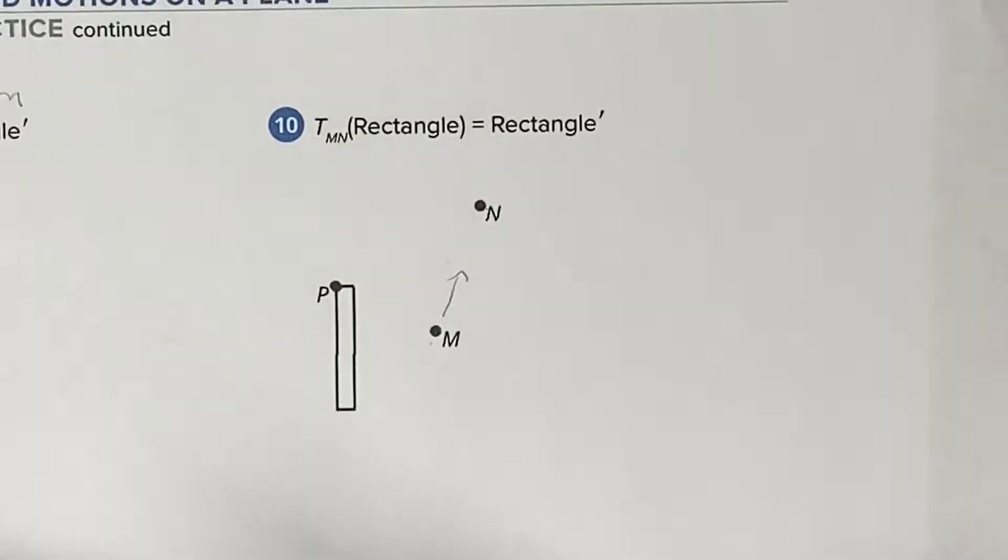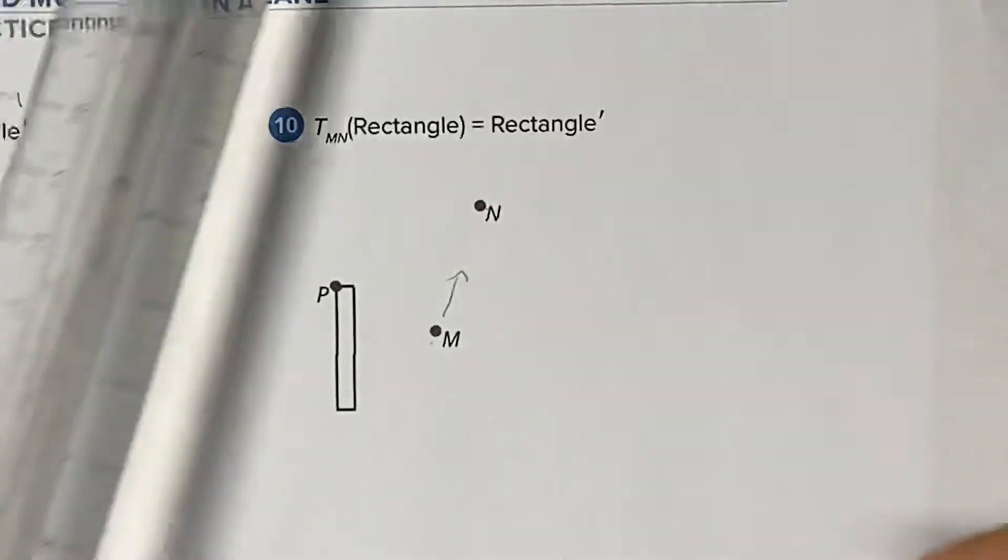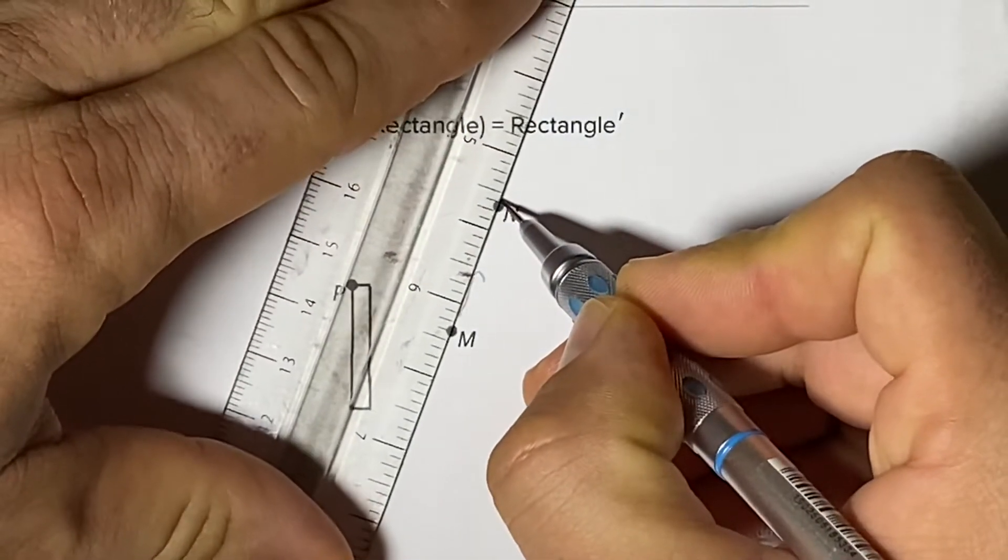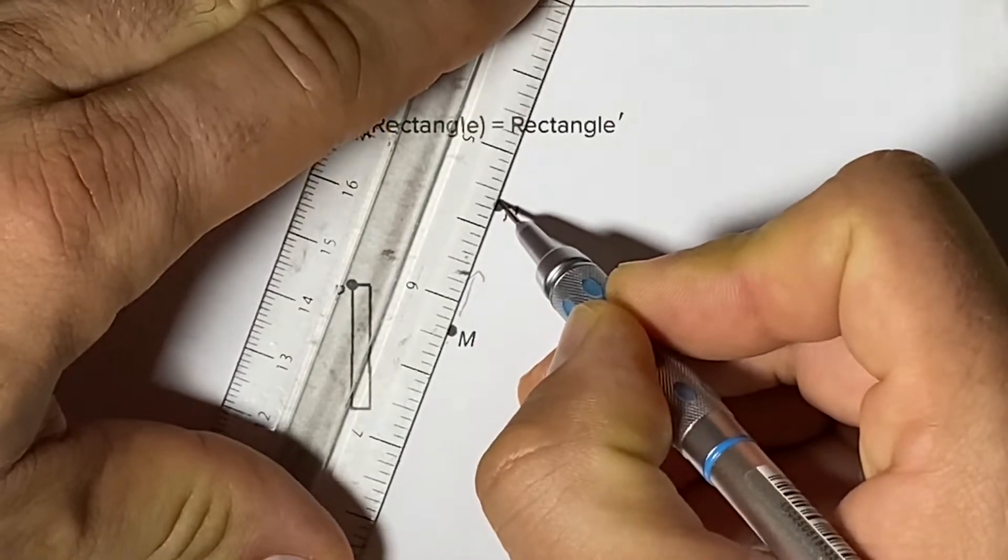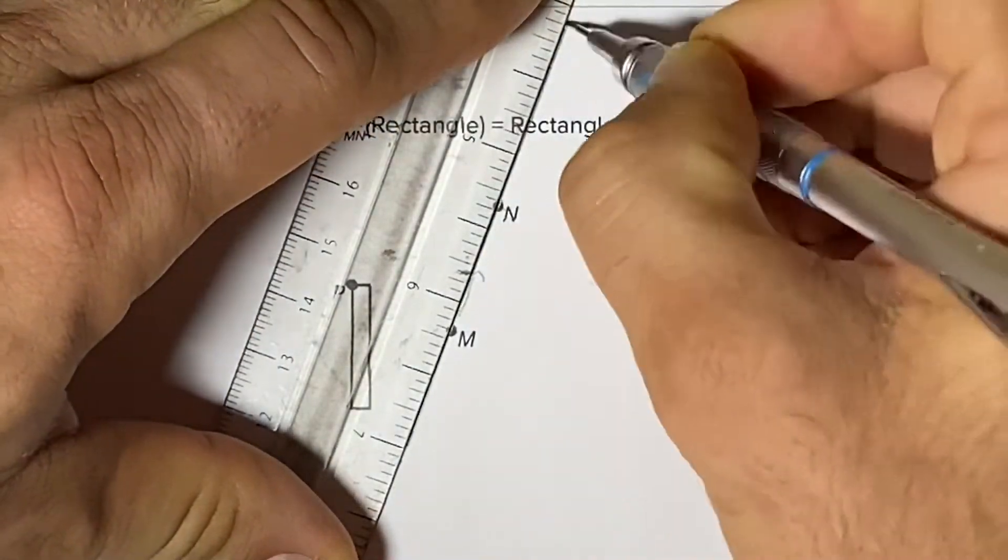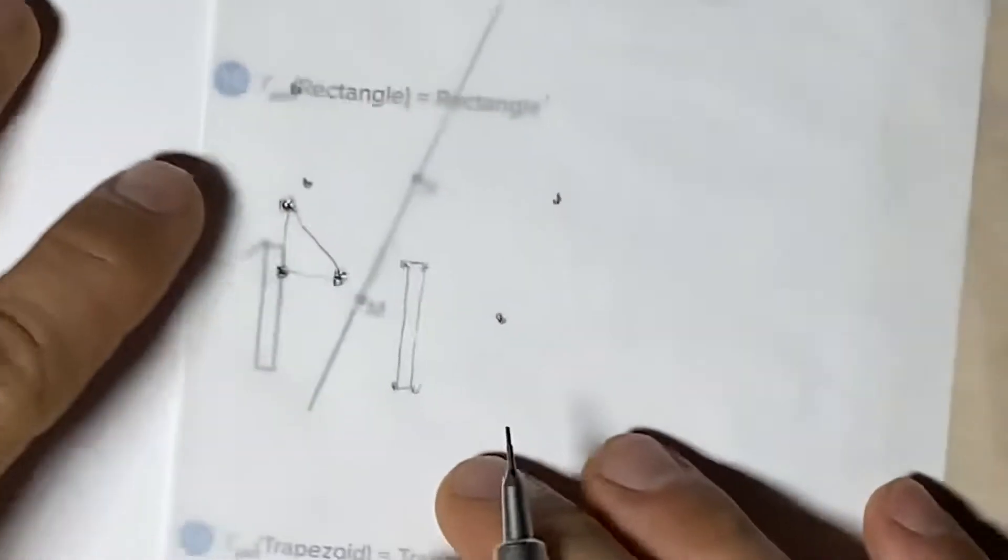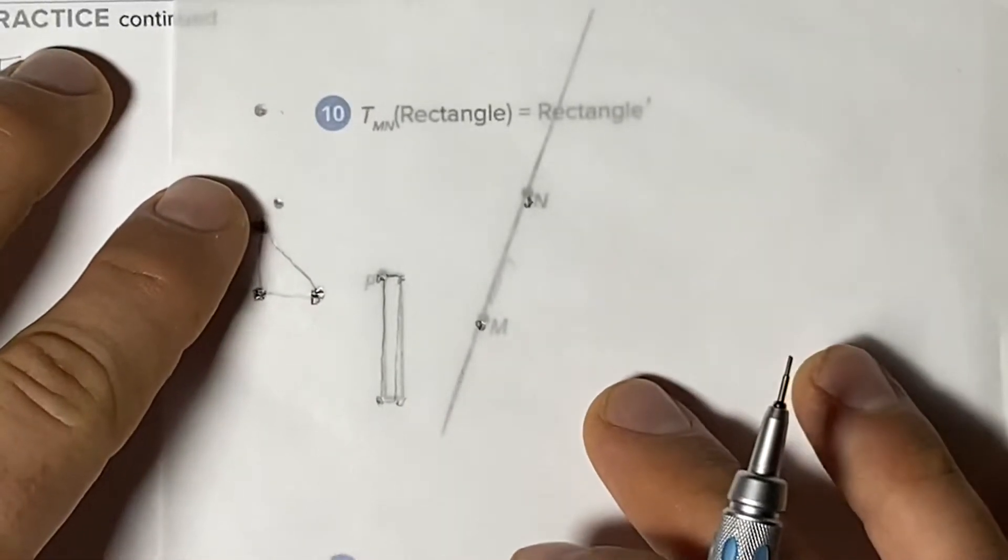So in order to not estimate and be more accurate, what we want to do is connect the dots and make our guide, make our pathway, so that we can make sure the two points we traced again stay on that pathway.